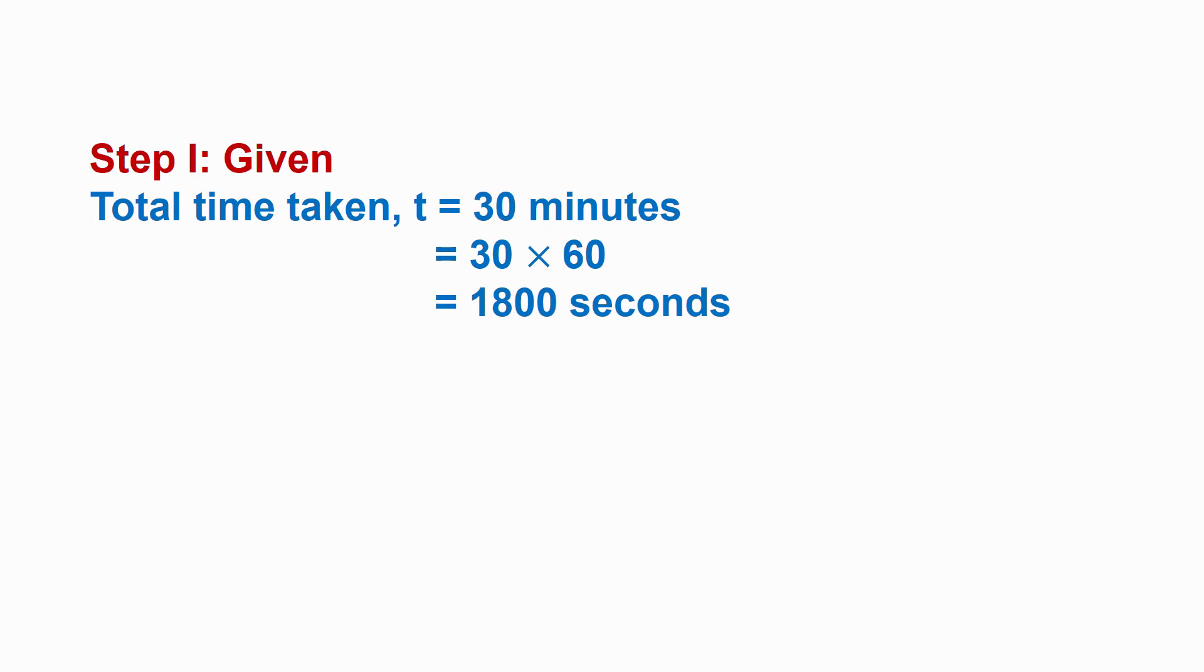Step 1: To solve the given problem, collect the data given in the problem. Total time taken t is equal to 30 minutes, which is equal to 30 into 60, that is 1800 seconds. And the speed of the bicycle s is equal to 5 meter per second.